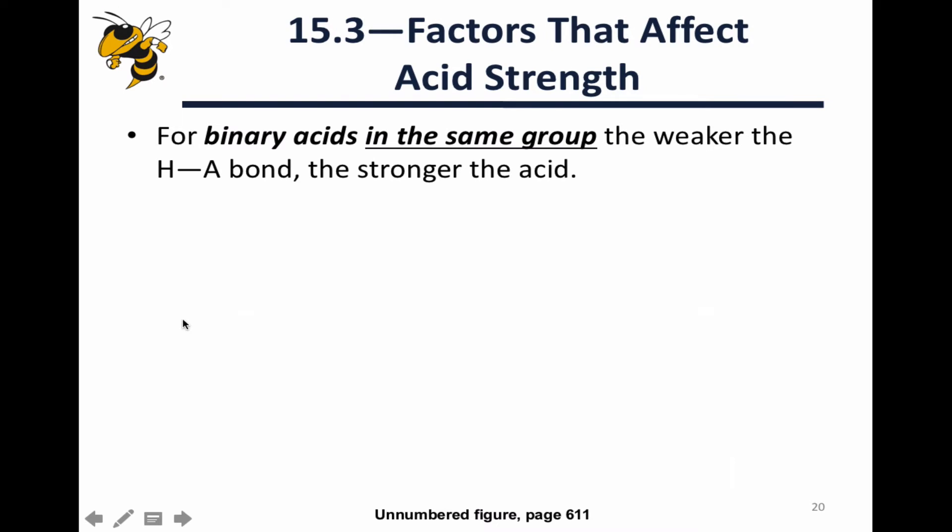For binary acids within the same group, the weaker the HA bond, the stronger the acid. Keep in mind that when we talk about binary acids in the same group, we're talking about acids whose A groups are associated with the same column of the periodic table. For example, the halogens F, Cl, Br, and I are all within the same group, and we can ask about the acidity of HX as a function of the atom within the group that's sitting in the X position.